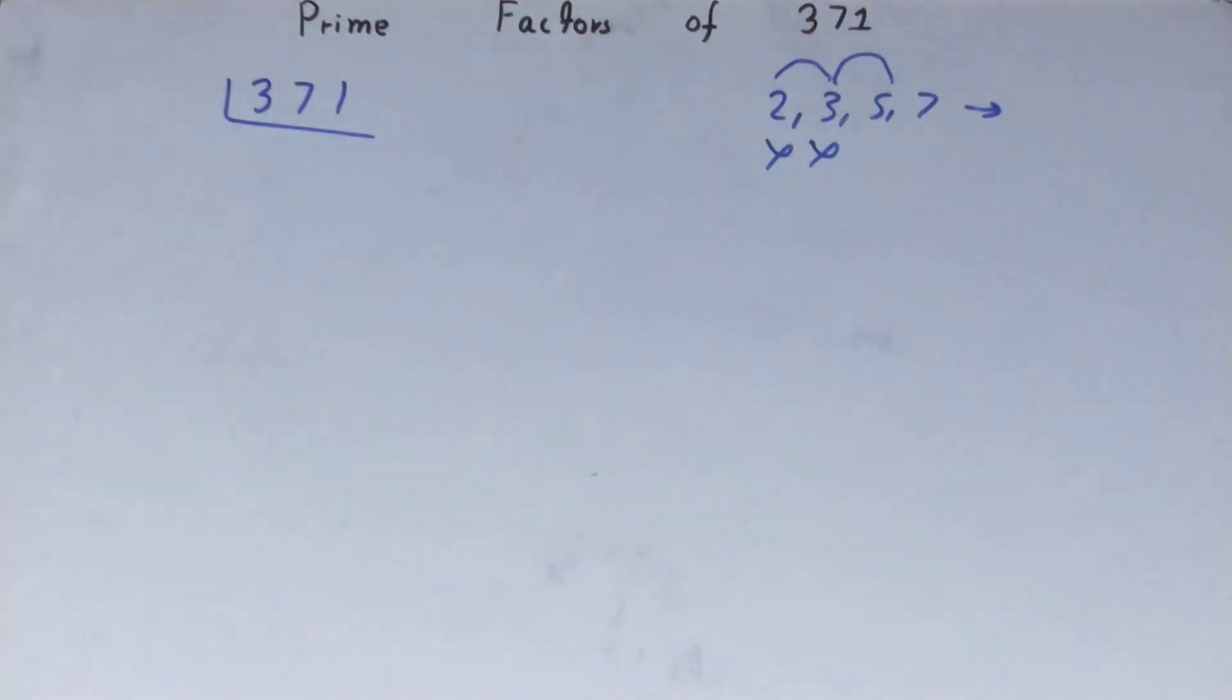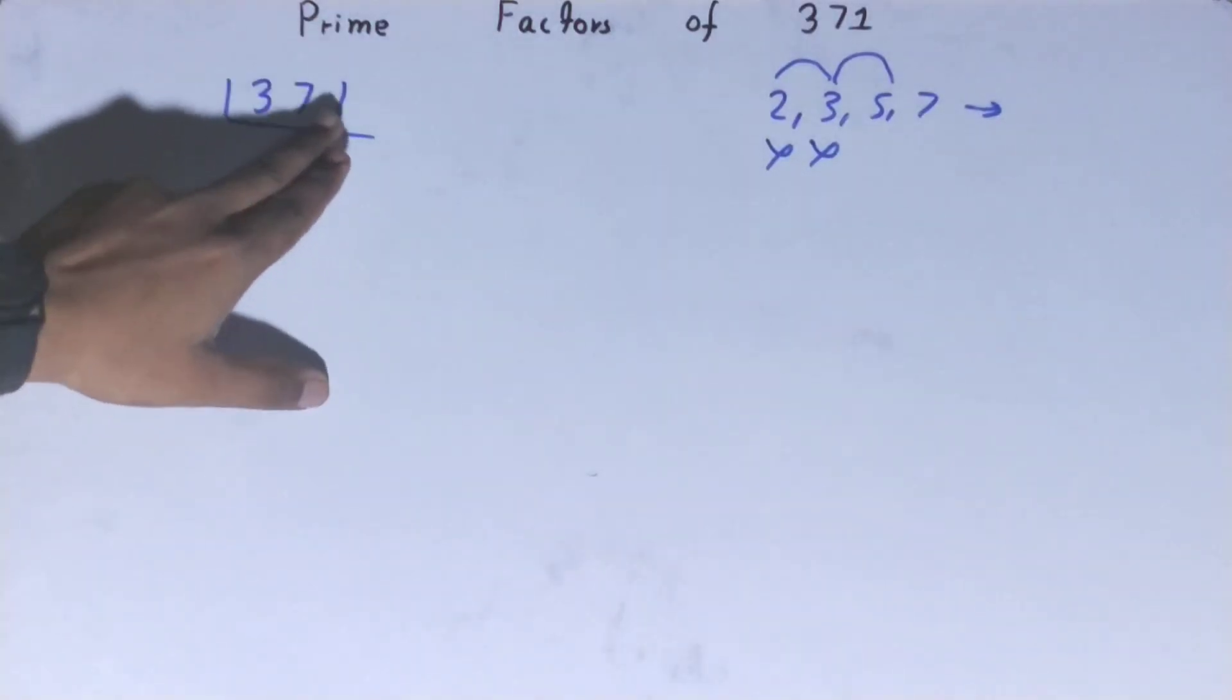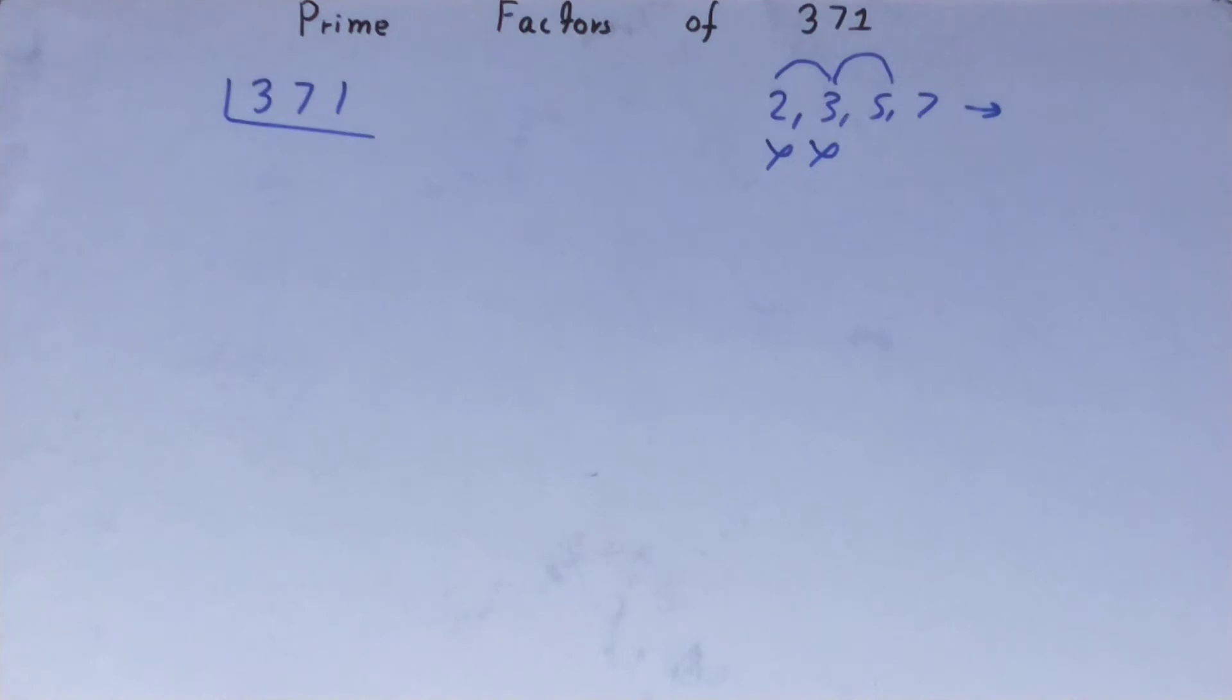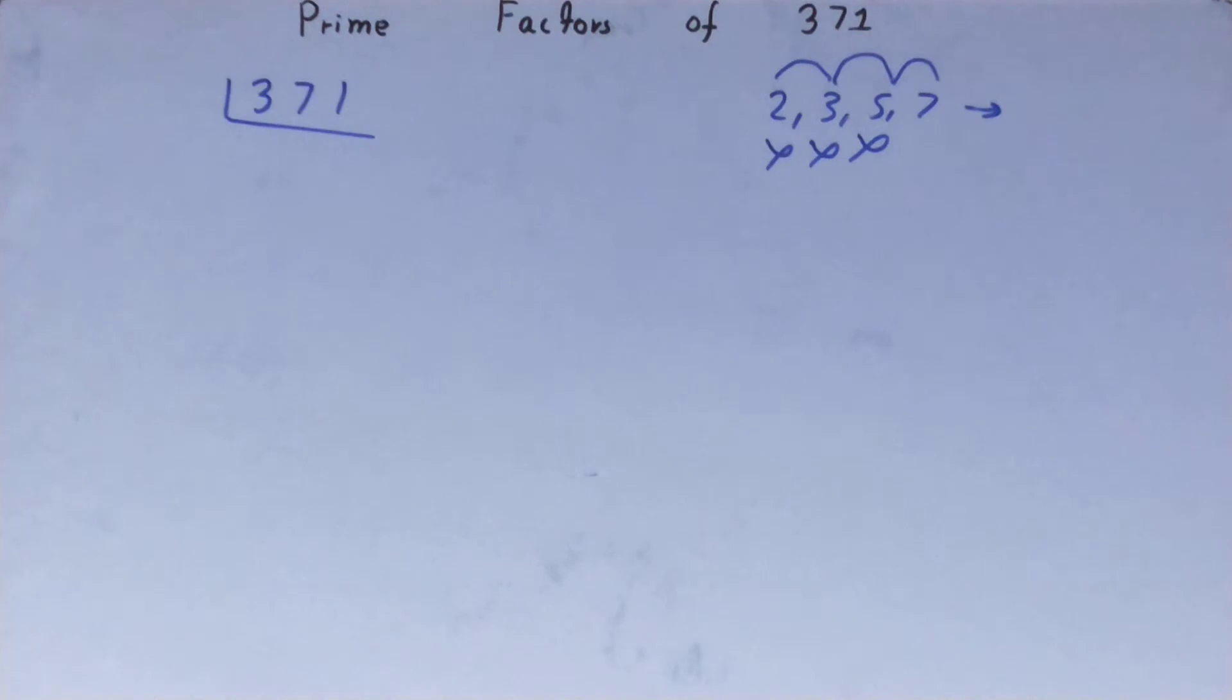We'll go to the next lowest prime number, that is 5. Is 371 divisible by 5? The last digit is neither 5 nor 0, so it is not divisible by 5 as well. So we'll go to the next lowest prime number: